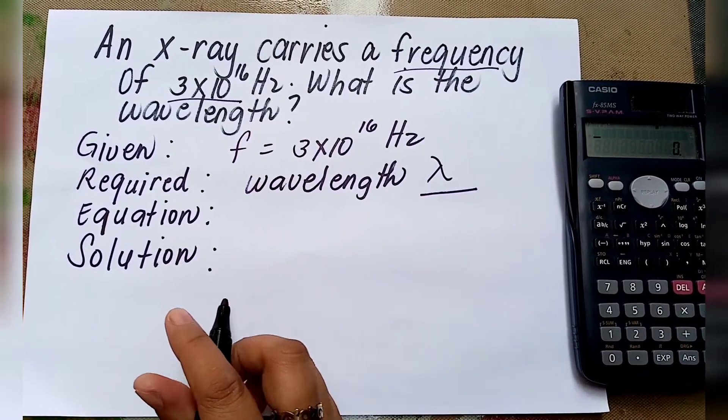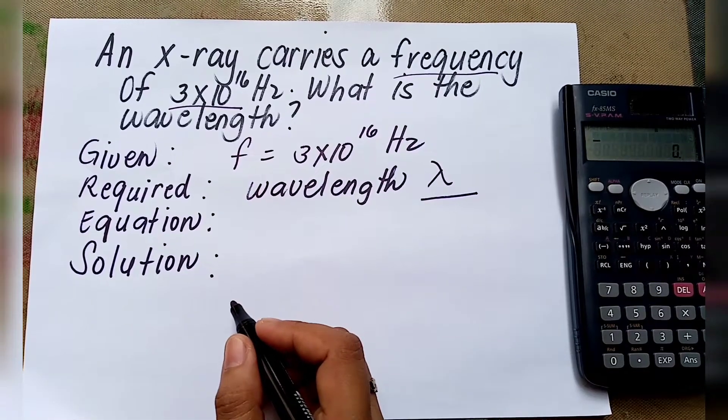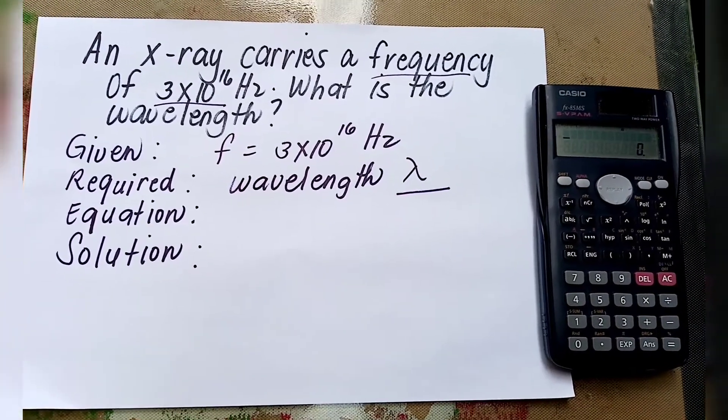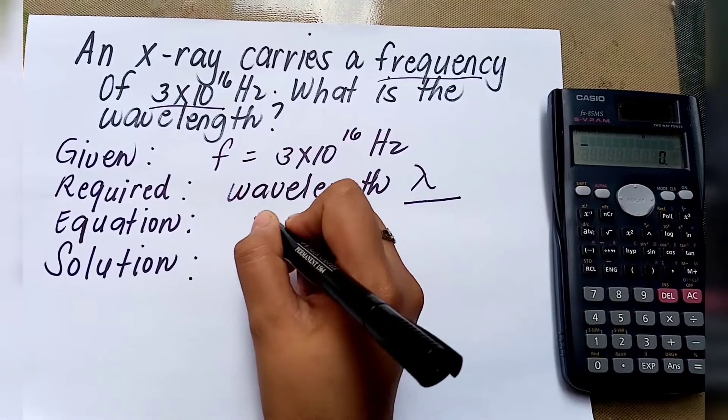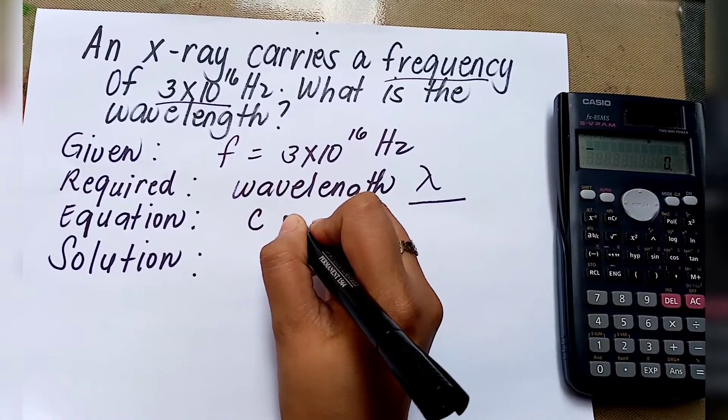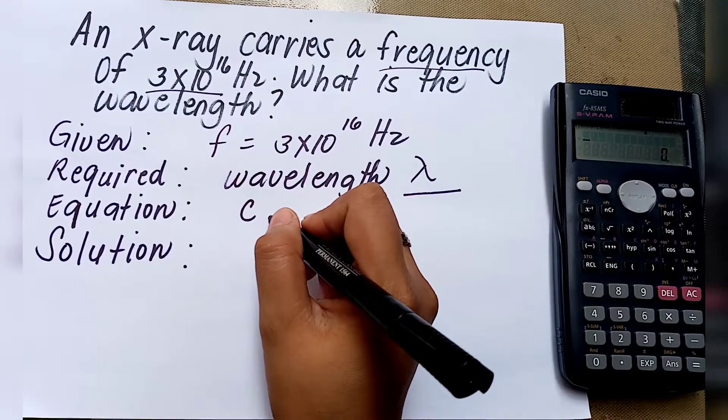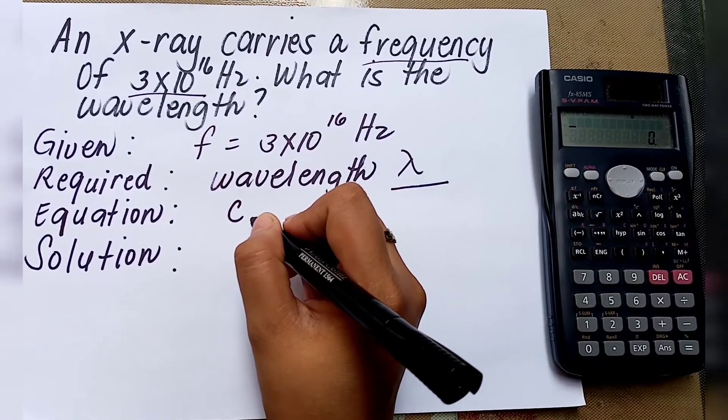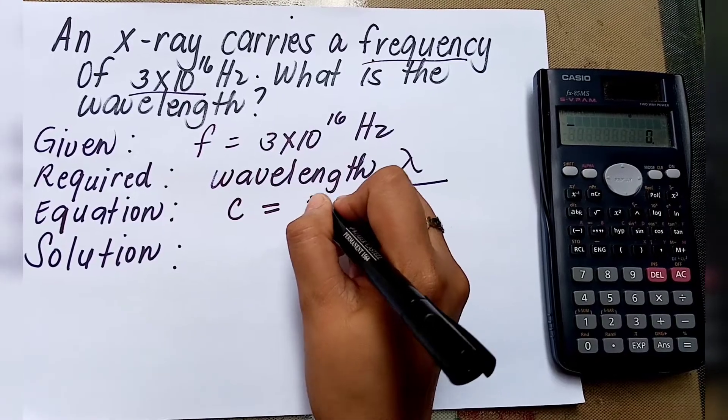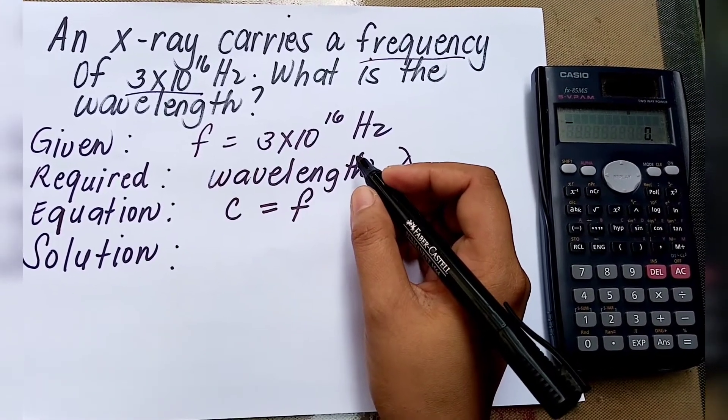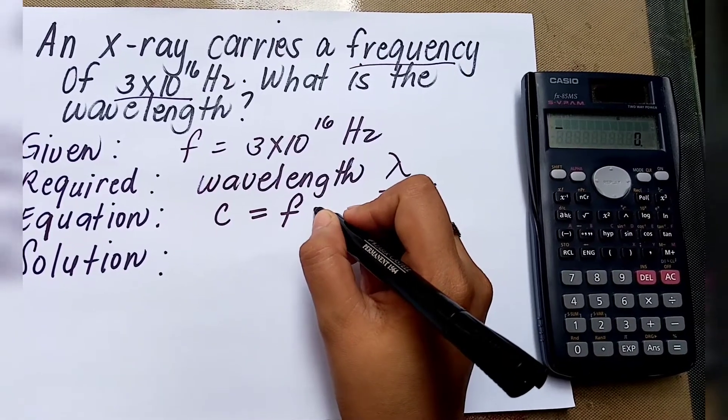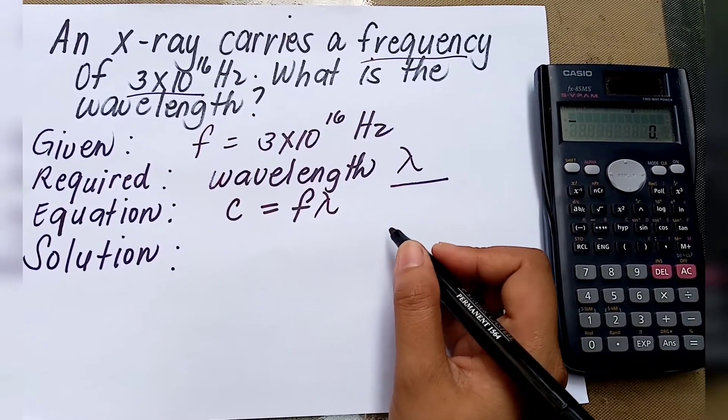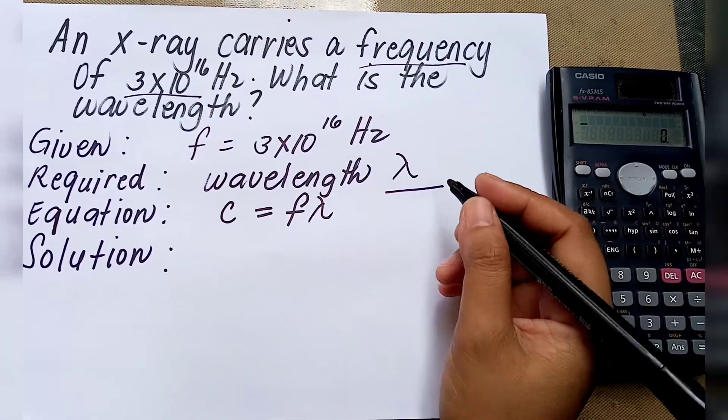What will be the formula or equation to be used in this problem? We may consider this equation: C is the speed of EM waves expressed in meters per second, equals frequency of EM waves expressed in Hertz, multiplied by wavelength of EM waves expressed in meters.